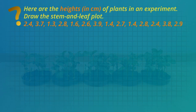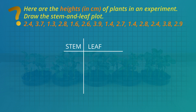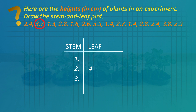Here are the heights of plants in an experiment. Draw the stem and leaf plot. Because the plant heights have decimals, the stem will be the units of the heights written as one decimal point, two decimal point, and three decimal point. The leaf will be the decimal part of the heights. Let's write the first height of 2.4 centimeters: two decimal point is the stem and four tenths is the leaf. Next, 3.7 is written as three decimal point as the stem and seven tenths as the leaf, and so on.